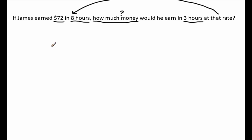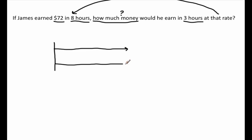The tool we can use is called a double number line diagram. A double number line literally has two number lines — one here and another here. We have two number lines because one counts one unit and the other counts the other unit. In this case, our two units are dollars and hours, so the top number line counts dollars and the bottom counts hours. The start of each number line is zero dollars to zero hours.